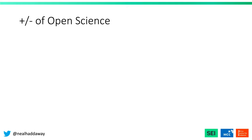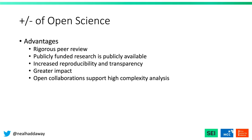There are various different advantages and disadvantages reported in relation to open science. Some of the advantages include things like more rigorous peer review, the fact that publicly funded research is publicly available — which perhaps is a mandate — the increased level of reproducibility and transparency of research, a greater impact in open science research, and that open collaborations can support high complexity analyses.